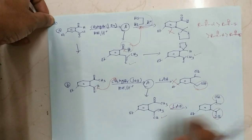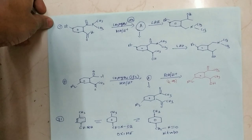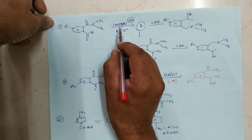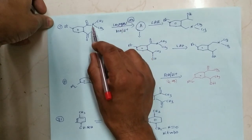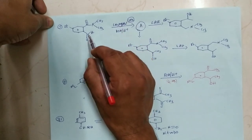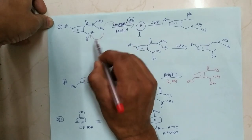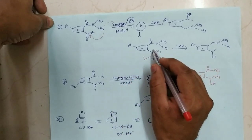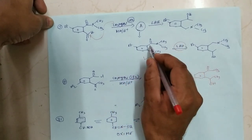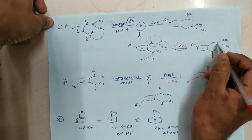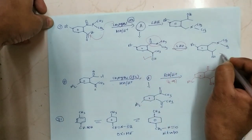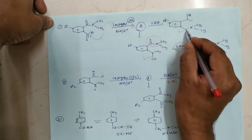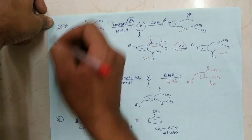Coming to option C, with amide and aldehyde reacting with one equivalent of methyl magnesium bromide — between amide and aldehyde, aldehyde is more reactive, so it is attacked by the methyl magnesium bromide giving this product. Now the amide is reduced by lithium aluminum hydride to CH2, CH3, and CH3. The correct product is given in option C, so option C is one correct answer.